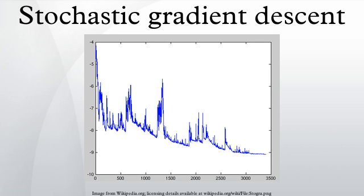Stochastic gradient descent is a popular algorithm for training a wide range of models in machine learning, including support vector machines, logistic regression, and graphical models. It competes with the L-BFGS algorithm, which is also widely used. SGD has been used since at least 1960 for training linear regression models, originally under the name Adaline. When combined with the back-propagation algorithm, it is the de facto standard algorithm for training artificial neural networks. Another popular stochastic gradient descent algorithm is the least mean squares adaptive filter.